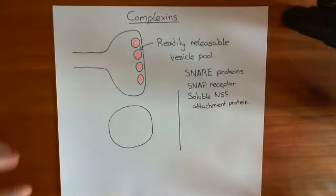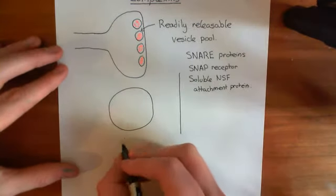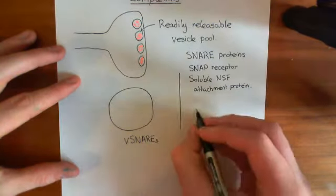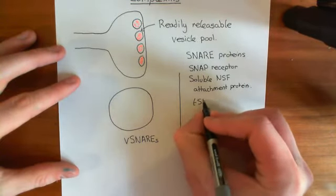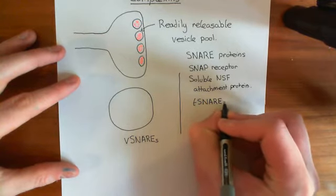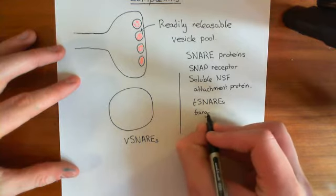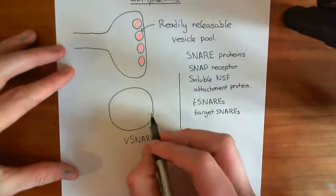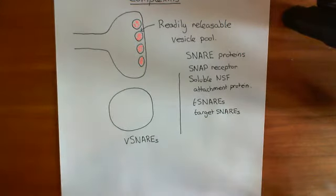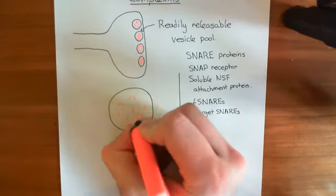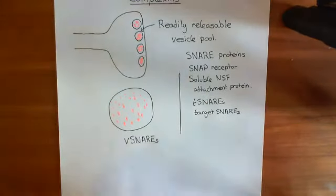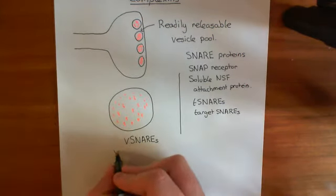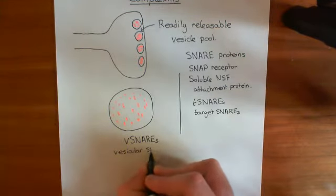SNARE proteins can be divided into two main types: the V-SNAREs, which are those SNARE proteins associated with the vesicle, and the T-SNAREs, which are those SNARE proteins associated with the plasma membrane. T stands for target SNARE because the plasma membrane is viewed as the target membrane — the synaptic vesicle is trying to fuse with it. V stands for vesicular, so those are the SNAREs associated with the synaptic vesicle membrane rather than the plasma membrane.